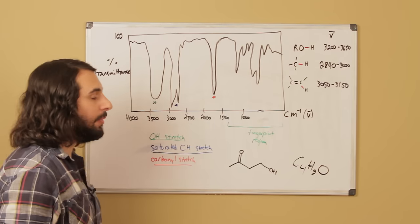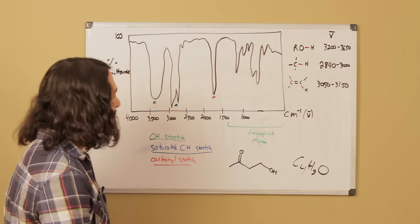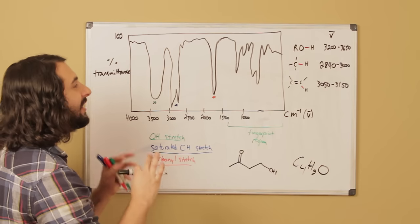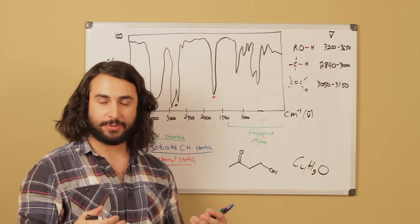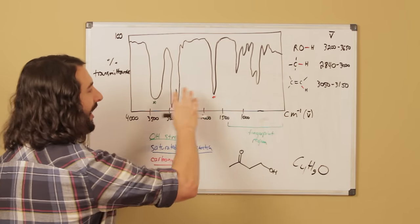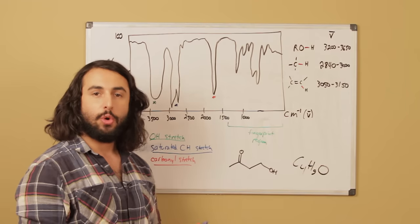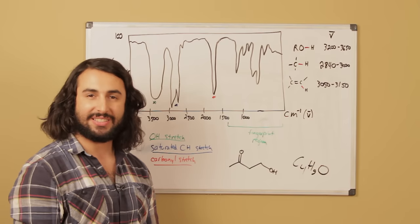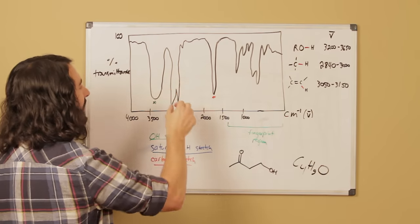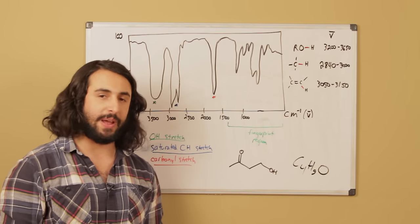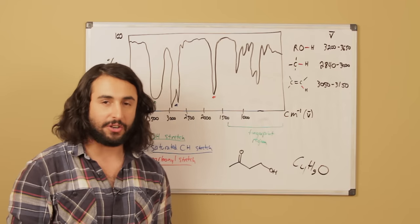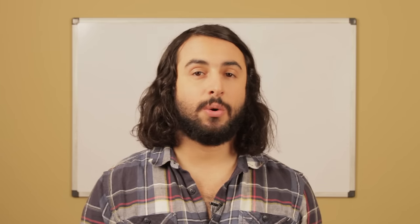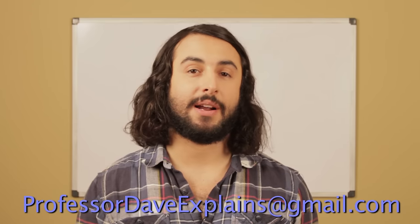If we saw an OH stretch we would say that oxygen must be a hydroxyl oxygen; if it was not present we would know it is not a hydroxyl oxygen. The main thing to take from this basic introduction to IR spectroscopy is that functional groups absorb IR light at specific wave numbers, providing very specific peaks. Not only do they occur at specific wave numbers, but they have characteristic shapes — the OH has a broad curvy dip, the carbonyl is thin and sharp — so we can take an IR spectrum and know roughly what functional groups are in a molecule. Thanks for watching; subscribe to my channel for more tutorials and feel free to email me at ProfessorDaveExplains@gmail.com.